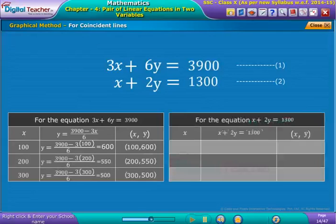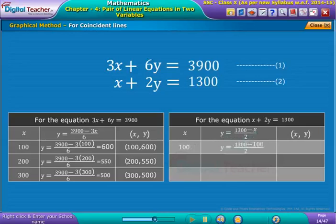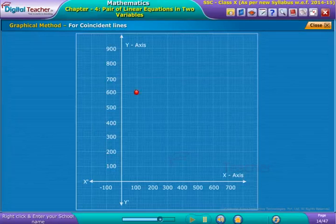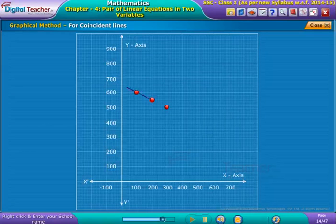Now, tabulate the ordered pairs X and Y respectively for the above equations as shown on the screen. Now, plot the obtained ordered pairs on a graph sheet. After plotting the graph, we observe that every point on the line is a common solution to both the equations. So, there are infinitely many solutions as the lines are coincident.